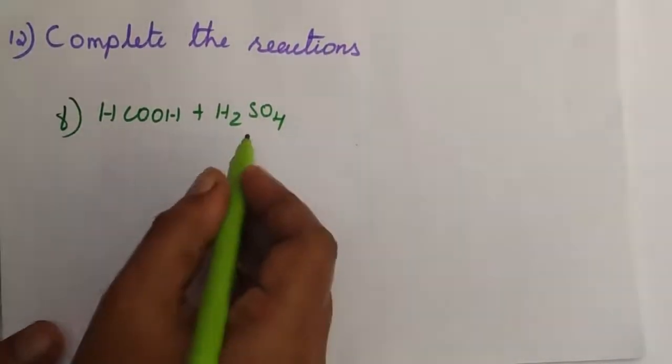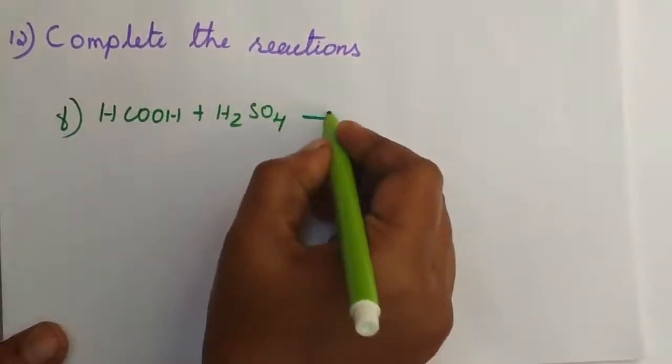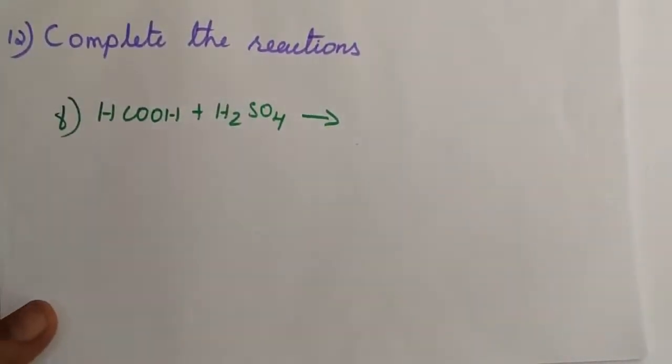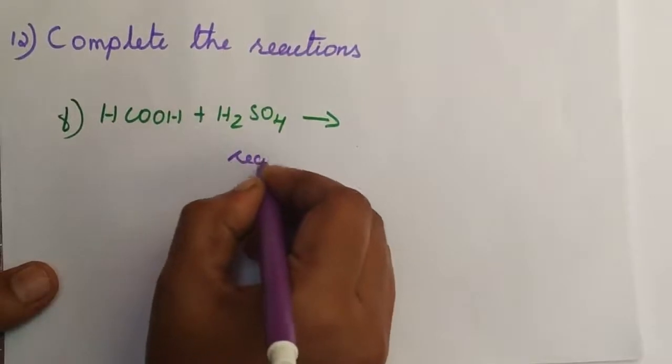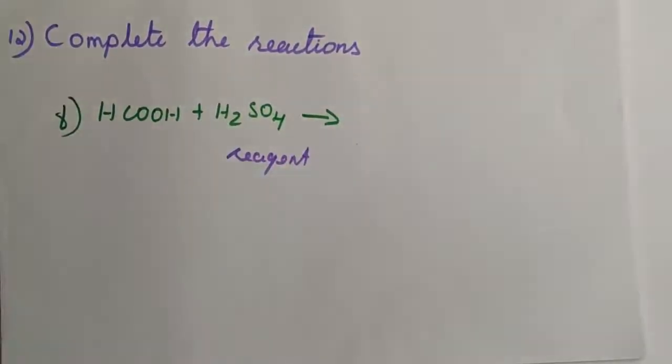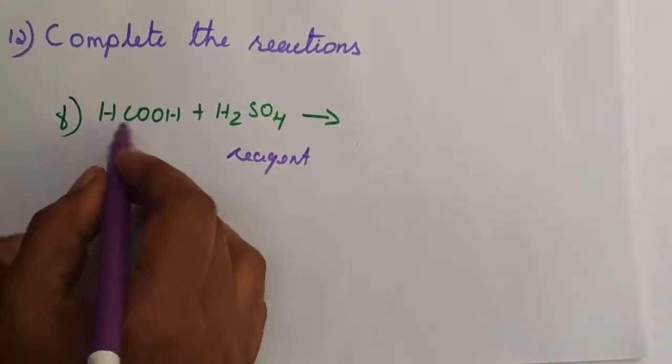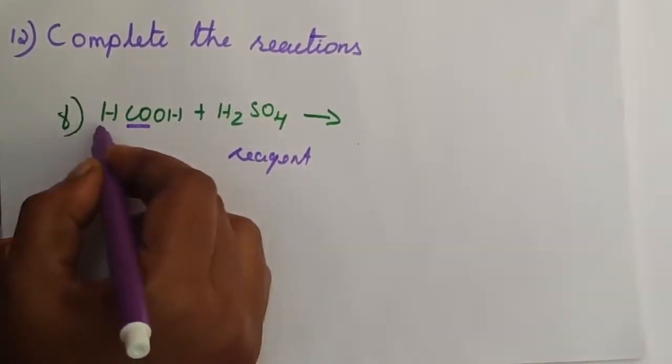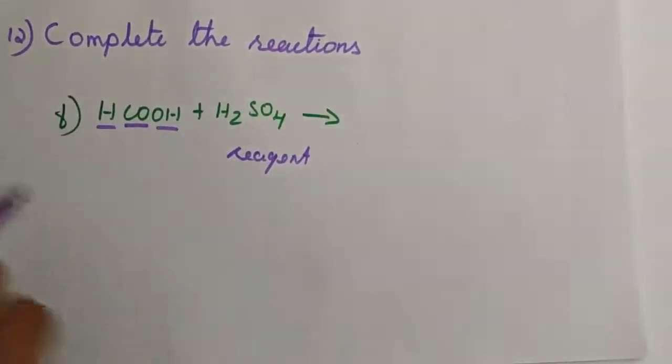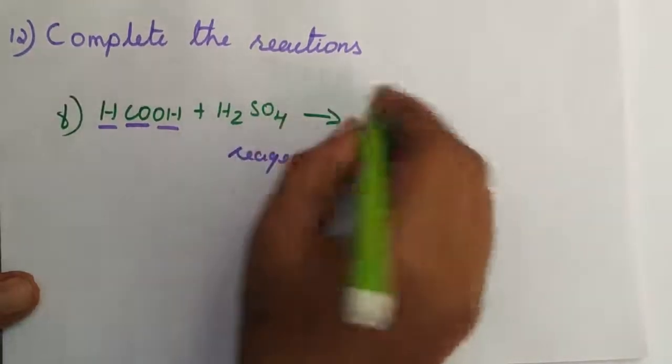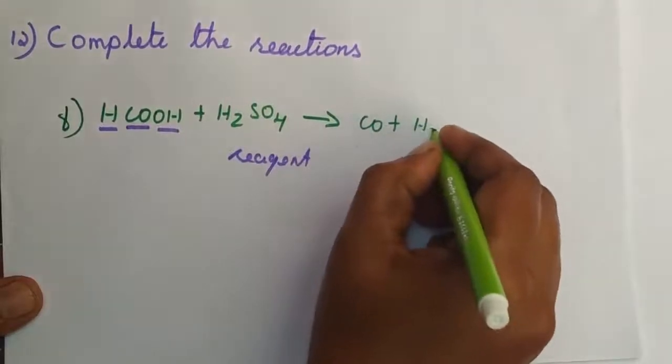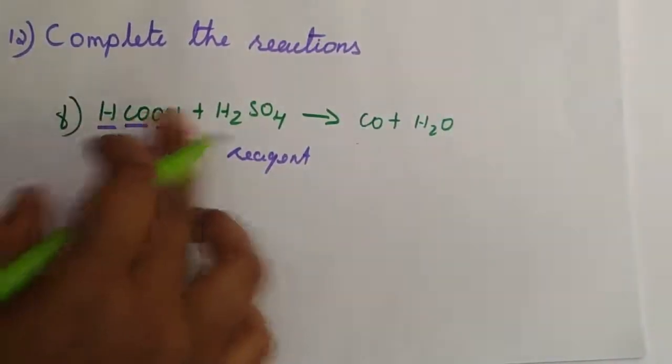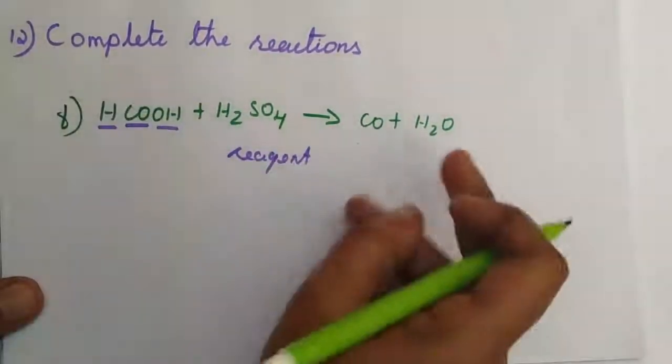HCOOH, formic acid, reacts with sulfuric acid H2SO4. This is a simple reaction where sulfuric acid acts as a reagent and doesn't appear in the product. When formic acid reacts, carbon monoxide gas liberates. So the product is CO plus H2O. The balanced equation is HCOOH plus H2SO4 yields CO plus H2O.